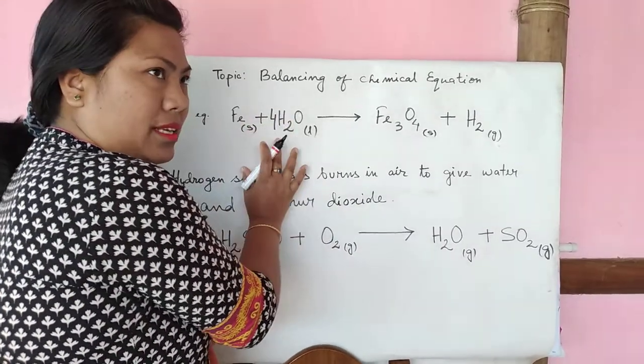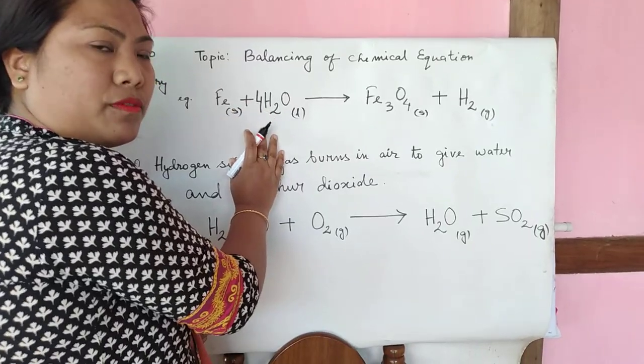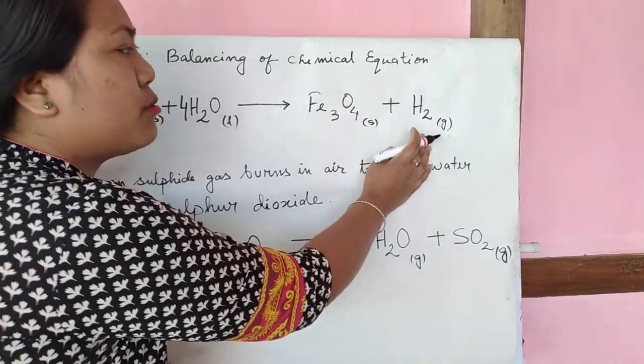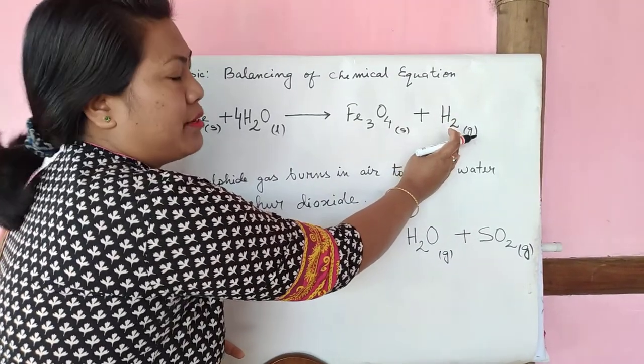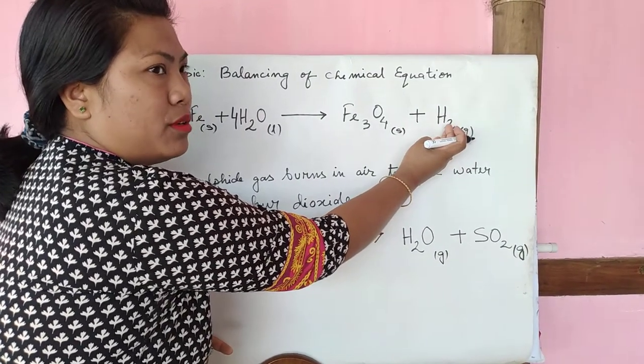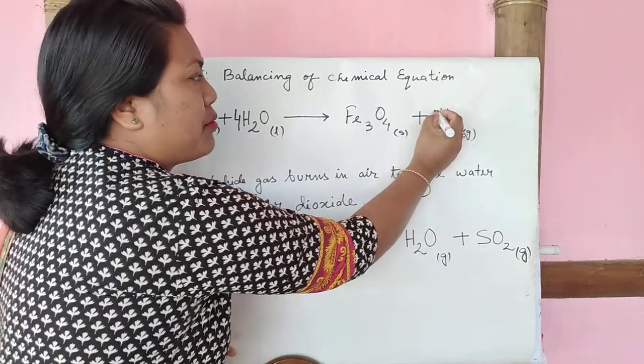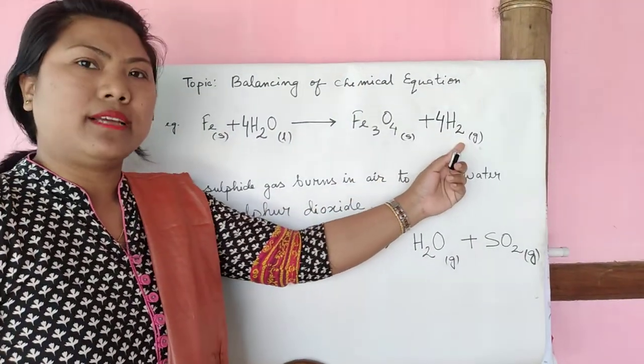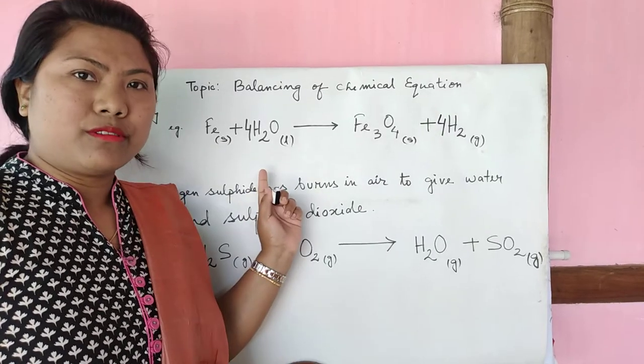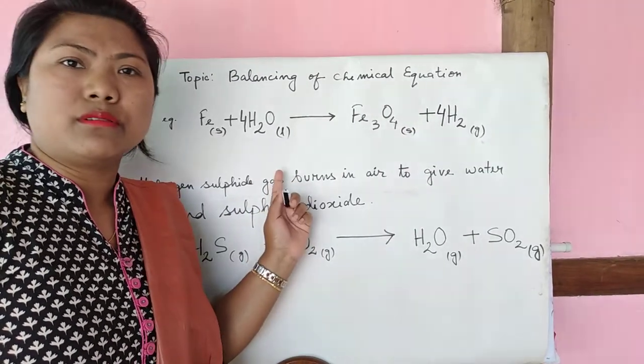Then on the left hand side you have 8 atoms of hydrogen. Now you need to make your right hand side 8 atoms of hydrogen. So already you have 2, so to make it 8, now you put another 4. After putting 4, 4 times 2 are 8. Now oxygen also balance and hydrogen also balance.